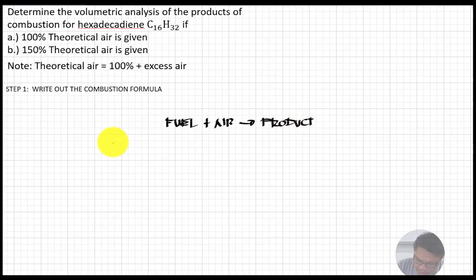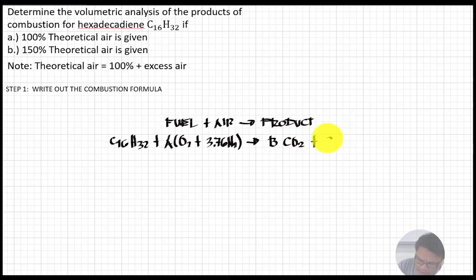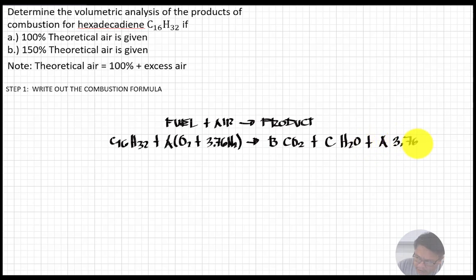For our fuel, we have C16H32. Then we add air, which is A times O2 plus 3.76 times nitrogen. This equals, on the product side, B of CO2 plus C of H2O plus A times 3.76 of nitrogen.